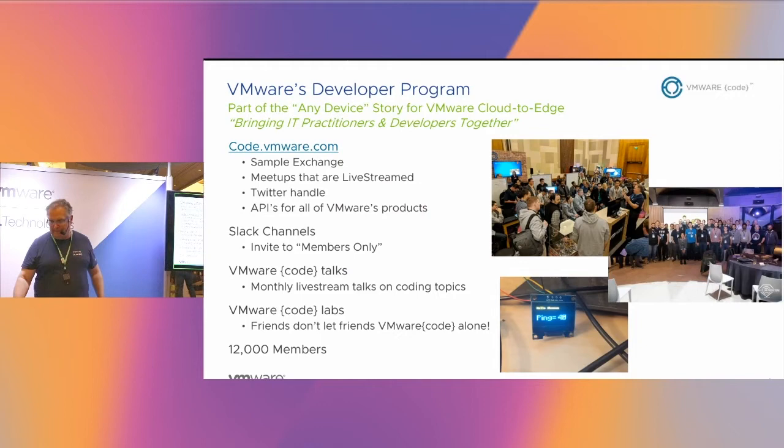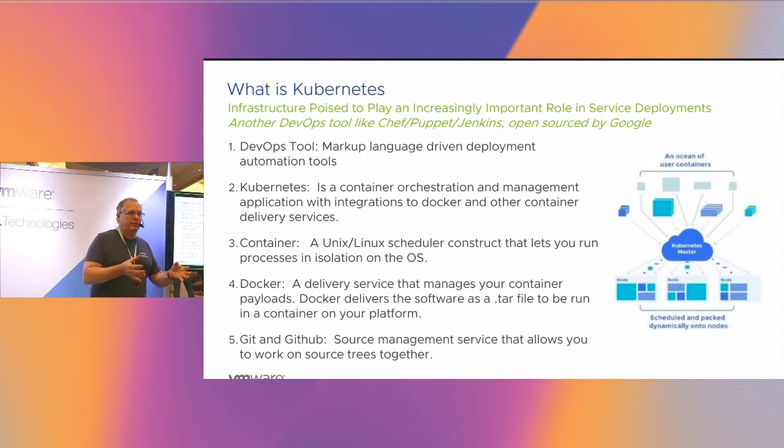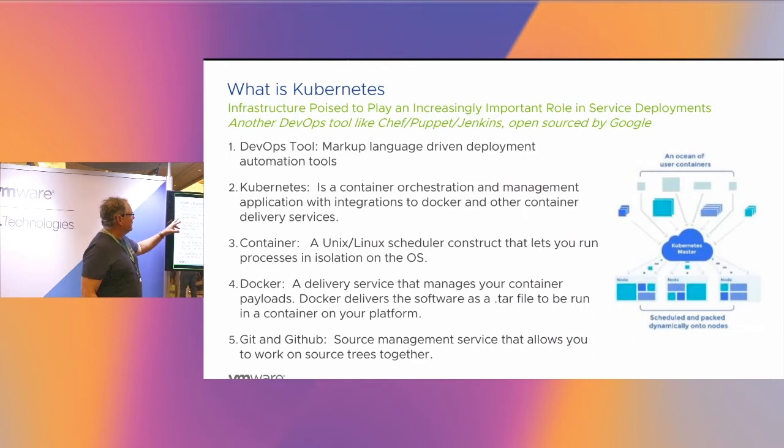Just some terms. DevOps tools — you ever use Chef, Puppet, Jenkins, Ansible, or even Makefiles? It's all about automation and deployment. So Kubernetes does this. DevOps tools use a markup language with syntax and key-value pairs, and Kubernetes is no different. They use YAML — Yet Another Markup Language — where you configure your deployment parameters right in the YAML file.